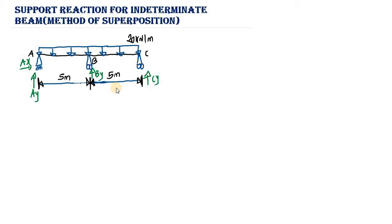This means the beam is statically indeterminate. You know a beam is statically indeterminate when the number of reactions is greater than the number of equilibrium equations. Here we have four reactions and only three equilibrium equations. Because four is greater than three, this beam is statically indeterminate.